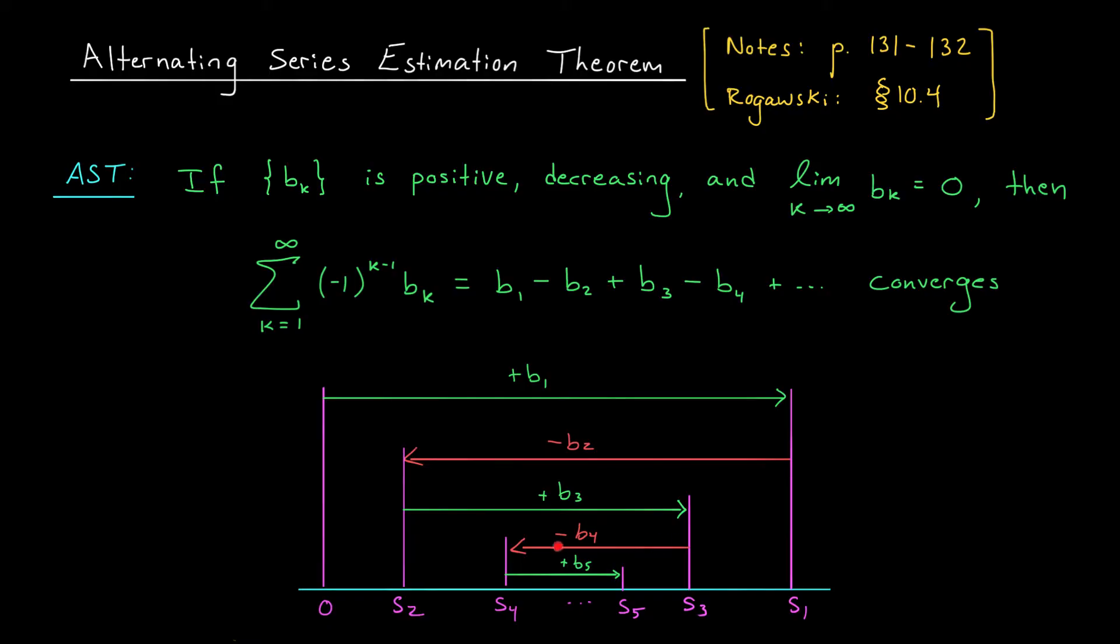You keep doing this, subtract b4, add b5, and your partial sums are sort of ping-ponging back and forth. Since our terms are going to 0, however, these changes that you see are getting smaller and smaller. Eventually, they'll be as small as you like, which tells me that my partial sums must be approaching some finite number s. That s is going to be the sum of our series.